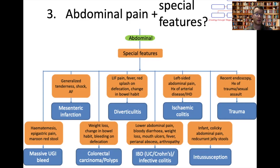With mesenteric infarction, as a general rule the patient has a clot and is usually in AF — in exam questions the history will likely indicate a history of AF or current AF. These are usually fairly sick patients with generalised tenderness and signs of shock.